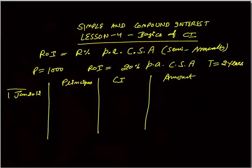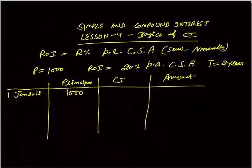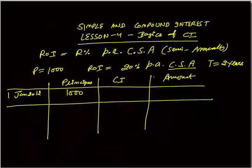The initial principal is Rs. 1000. Because the rate of interest is 20% per annum compounding semi-annually, the semi-annual rate of interest will be R by 2, which is 10%. So the compound interest for the first six months will be 10% of 1000, which equals Rs. 100.